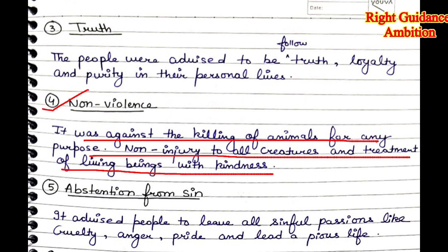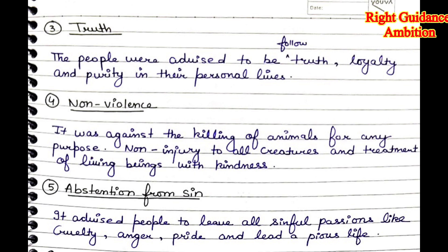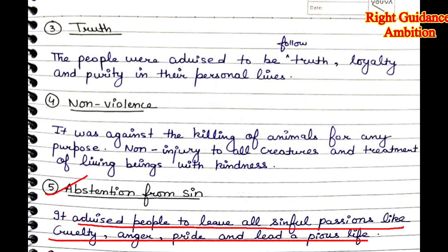Ashoka's policy of non-violence stated that no injury should be done to any creatures, and all living beings should be treated with kindness. They said do not harm any creatures; treat them with love and help them.